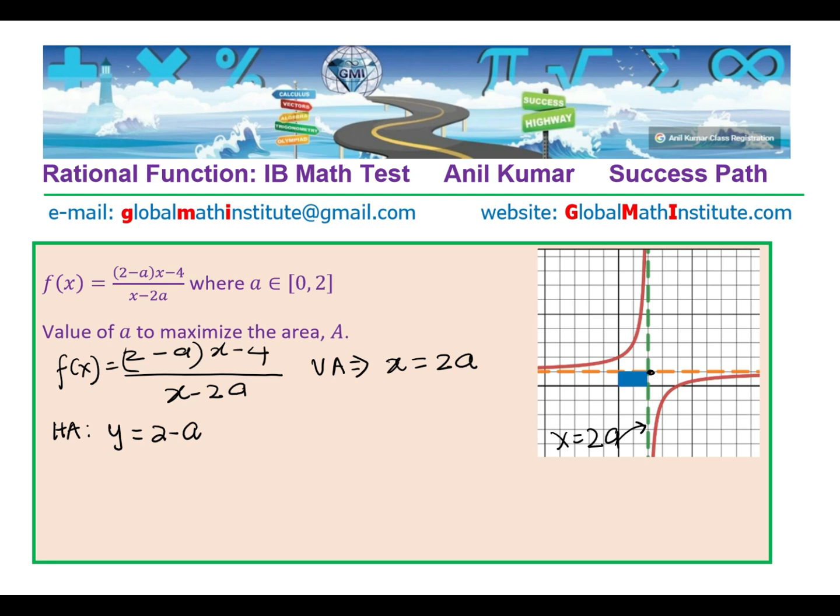Once we know these two asymptotes, we can actually find the coordinate point right there at the corner of the rectangle. So the x value of this definitely is 2a, right? And the y value is 2-a. Now we know the area of this rectangle also.